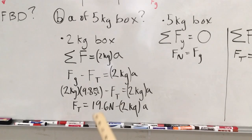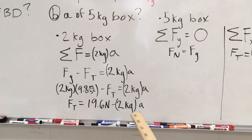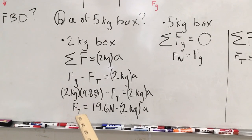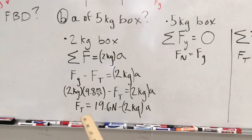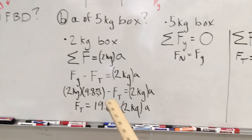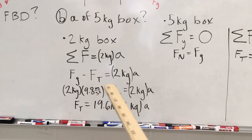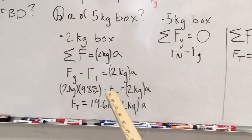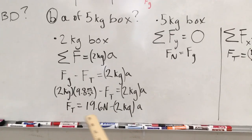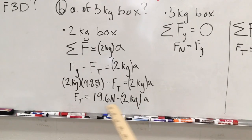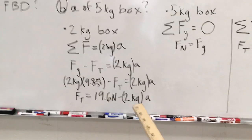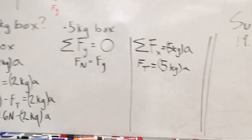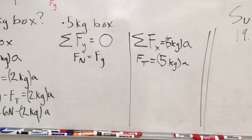We now have two variables in this equation: tension (Ft) and acceleration. We'll use the substitution method to find both. Solving for tension by rearranging, we get an implicit expression for the force of tension. We need another equation to find the acceleration, so let's analyze the five kilogram box.